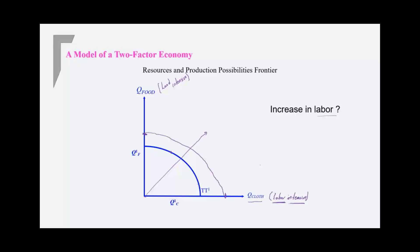So you have a production possibility frontier, which expands outwards, but it is a biased expansion.